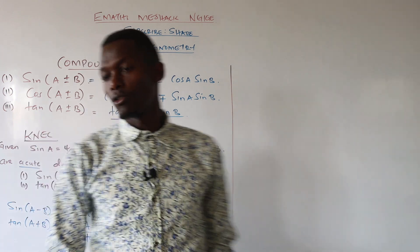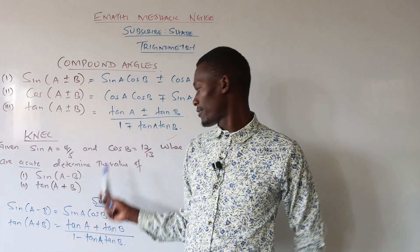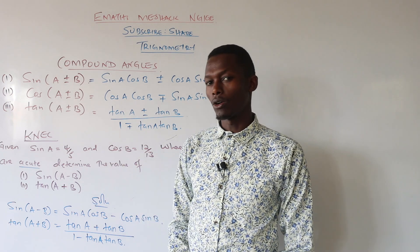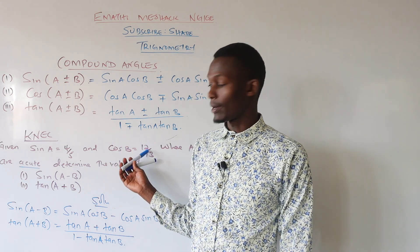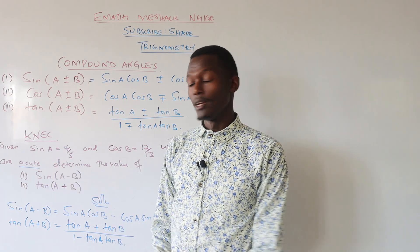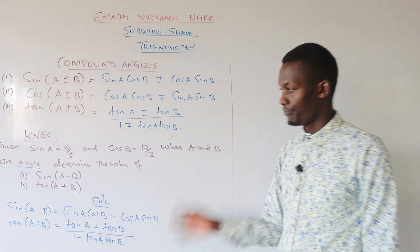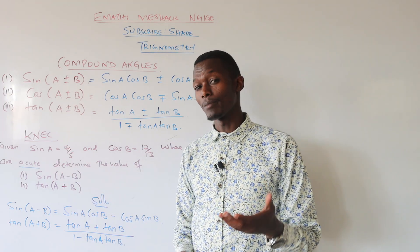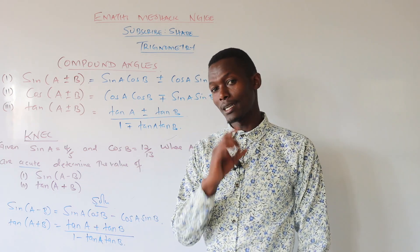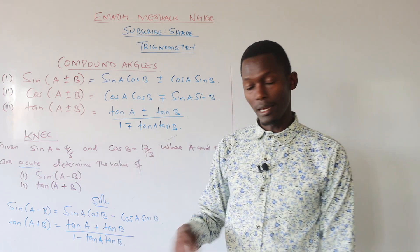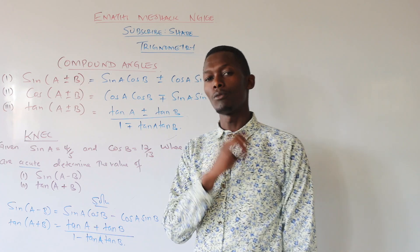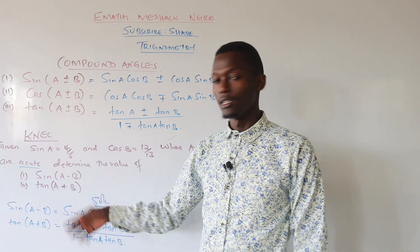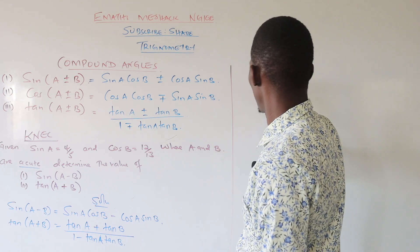Most of the time students make the mistake of just adding the angles. Remember, 4 over 5 and 12 over 13 are not the values of the angles themselves — they are the trigonometric ratios. The way to solve this is to draw two triangles, since these are derived from Pythagoras' theorem relationships of a right-angled triangle.